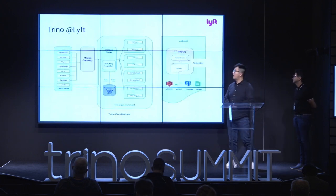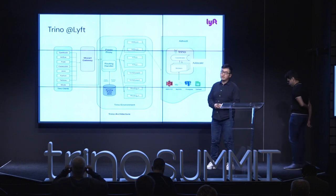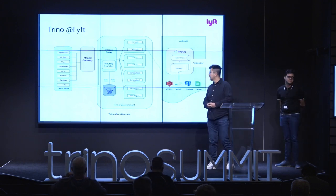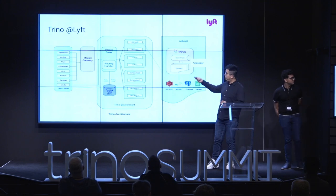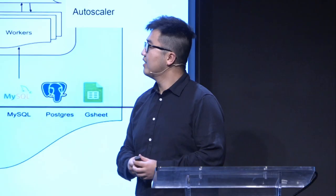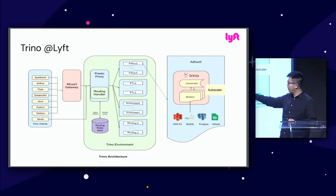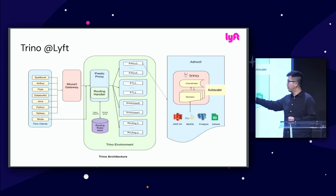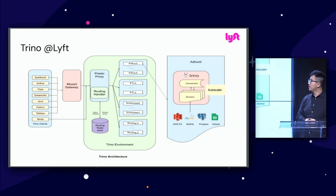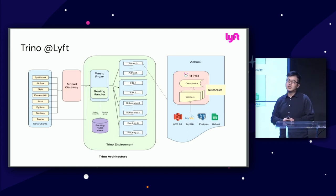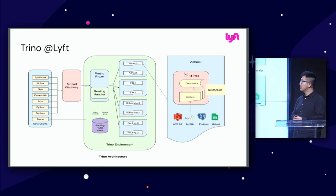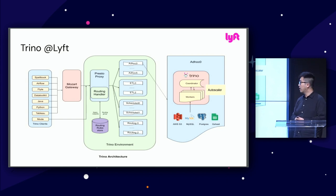First, how Trino looks within our company. Horizontally, there are four parts. The first part includes clients like Airflow, Java SDK, Python, Tableau, and Mode for reporting. Those are all the clients we support with Trino at Lyft — basically all the user interfaces we have at Lyft, and Trino is supporting all of them.